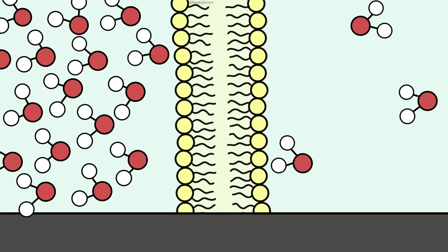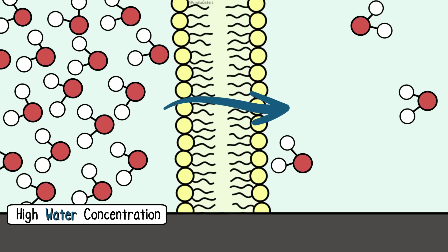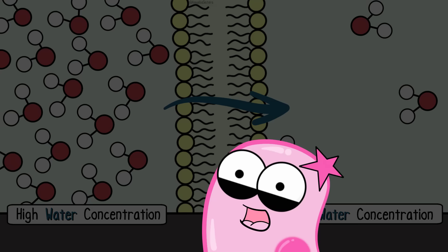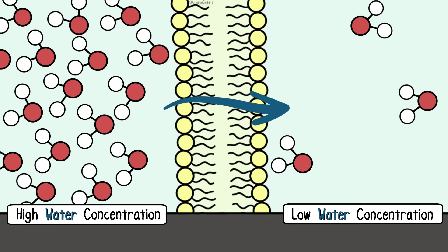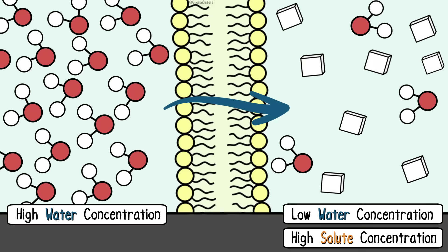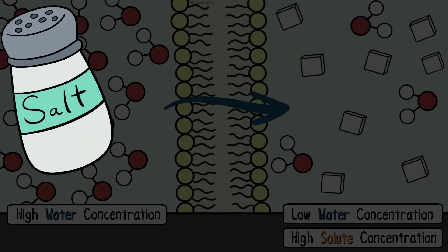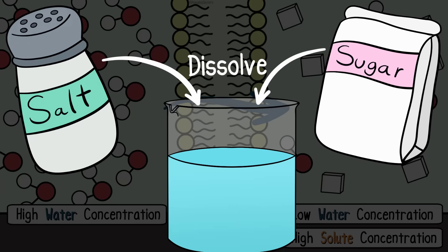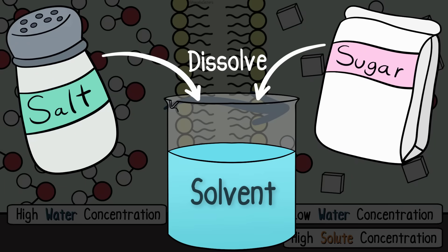In osmosis, water molecules travel from areas of a high concentration of water molecules to a low concentration of water molecules. But there's another way to think about water movement in osmosis. A low water concentration likely means there is a greater solute concentration. Solutes are substances like salt or sugar that can be dissolved within a solvent, like water.